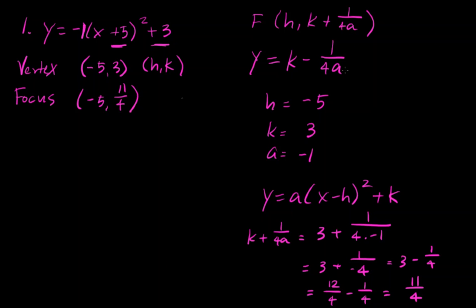So let's go ahead and use that formula. y equals k minus 1 over 4a, y equals 3 minus 1 over 4 times negative 1, which is y equals 3 minus 1 over negative 4. So that's y equals 3 plus 1 fourth, or 3 and 1 fourth, or if you like it in improper fractions, that's going to be 13 fourths.